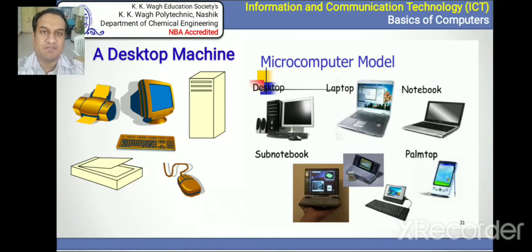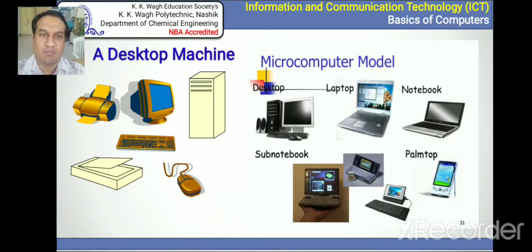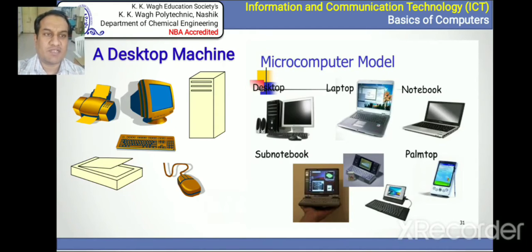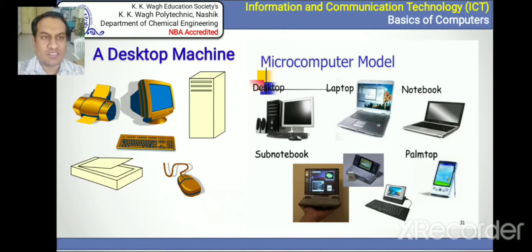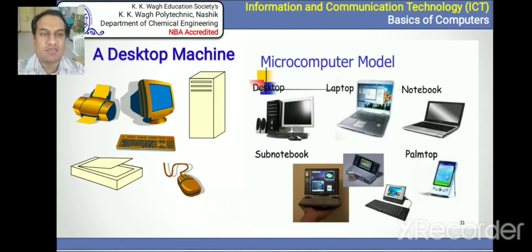In previous years and in offices we were using desktop machines which contain the monitor, CPU, keyboard, mouse, and accessories like printer, scanner, etc. In cases where we are travelling or need to access the internet or network, we have to use a notebook, palmtop, or mobile instead of the desktop. The desktop is a fixed computer, but when we require some flexibility we must go for other computers.